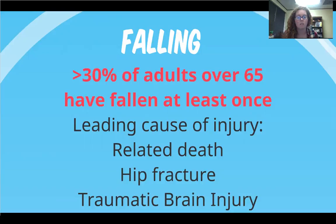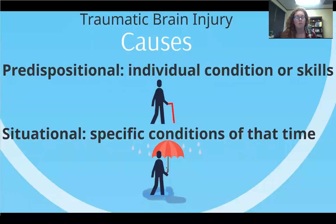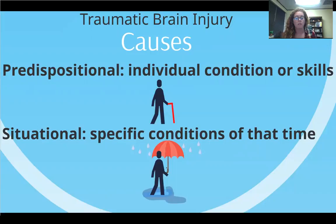What we want to do with older adults is prevent falls. The causes of falls can be either predispositional or situational. Predispositional is something about the individual that makes them more likely to fall — if they've already had an injury, if their vision is poor, or if they have muscle weakness on one side. Situational means it's something specific to right now, like if you walked out in the rain or snow and the surface is slippery, which puts you at risk of falling.